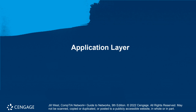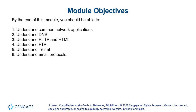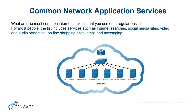In here, application layer, layer number seven of the OSI. We will learn about the common network applications: DNS, HTTP, and HTML.